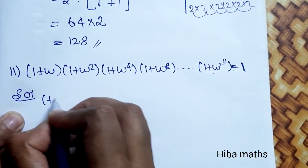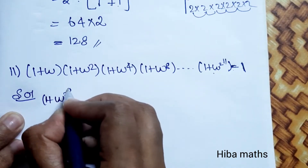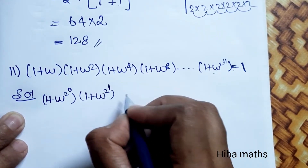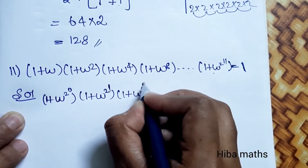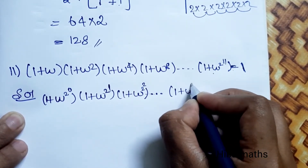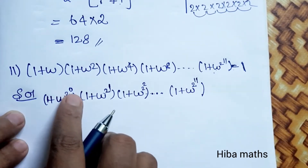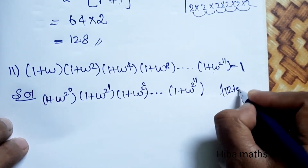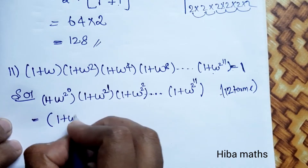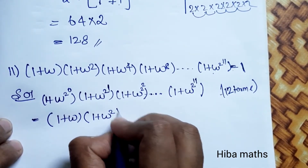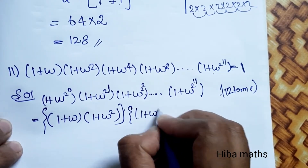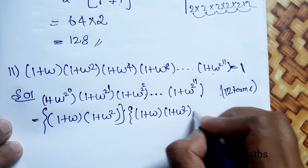We rewrite the terms: (1 + ω^(2^0)) · (1 + ω^(2^1)) · (1 + ω^(2^2)) ... up to (1 + ω^(2^11)). That gives us 12 terms in total. We can pair them as (1 + ω)(1 + ω²) repeated 6 times.